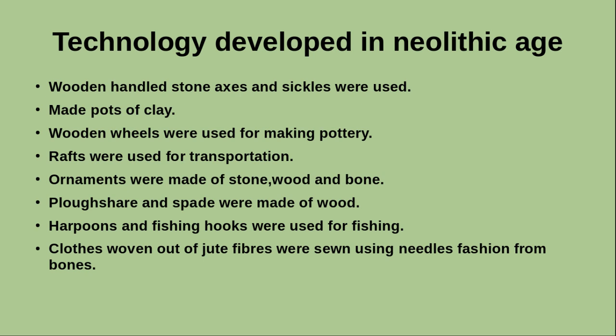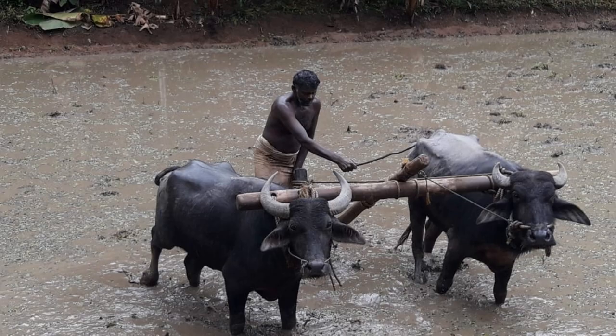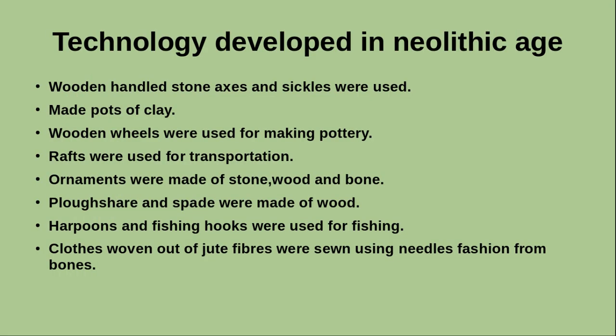Rafts were used for water transportation. Ornaments were made of stone, wood, and bone. Plowshare and spade were made of wood. Harpoons and fishing hooks were used for fishing. Clothes woven out of jute fibers were sewn using needles fashioned from bones.